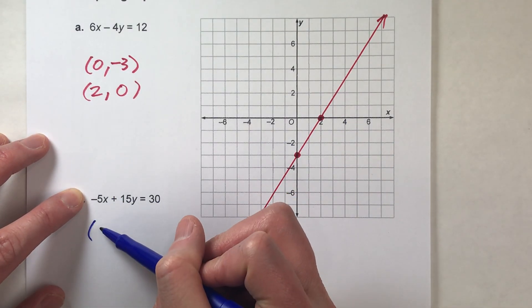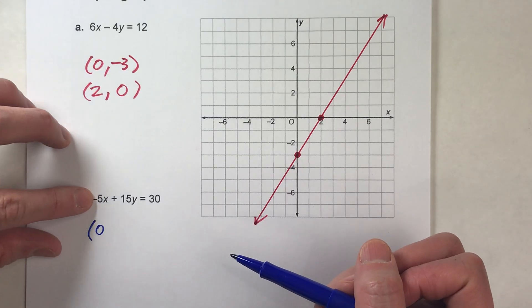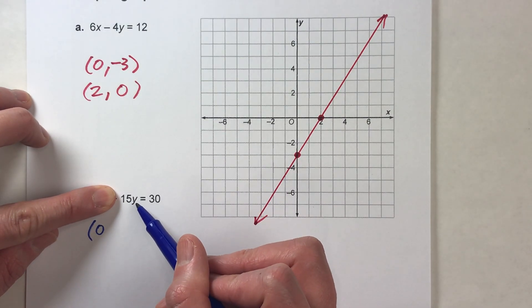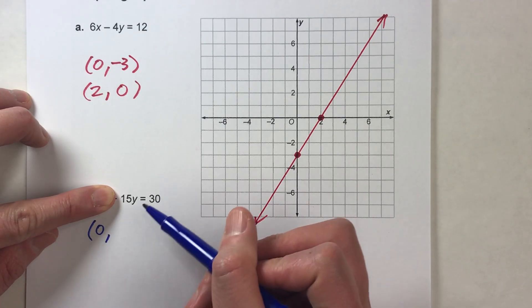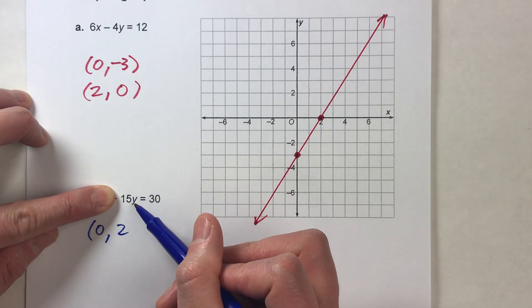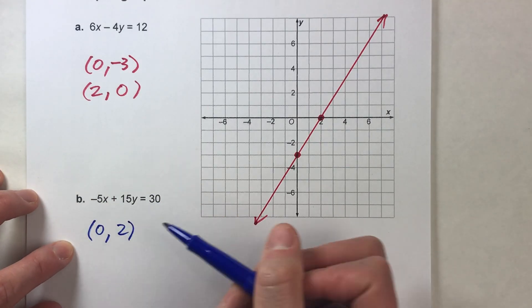If x is zero, then negative five times zero is zero. So we just have 15 times y equals 30. What's y have to be so that 15 times y equals 30? Well, y has to be two because 15 times two is 30. So there we go.